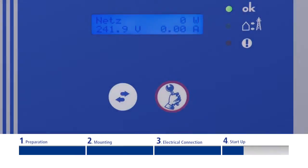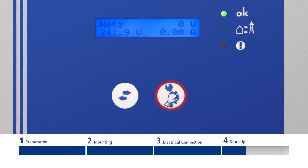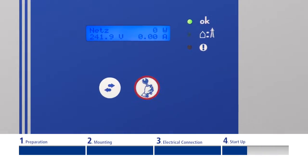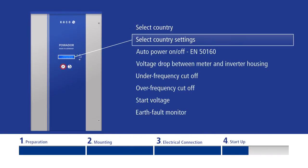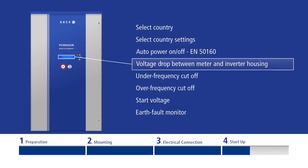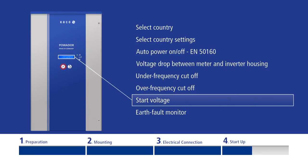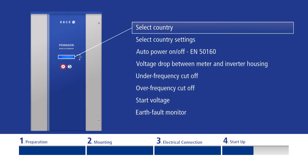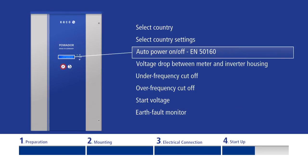To switch to programming mode, hold down the right-hand button for approximately 20 seconds. Use the left-hand button to scroll through the various menu items. The menu is continuous. When you reach the end, the display automatically returns to the first item.